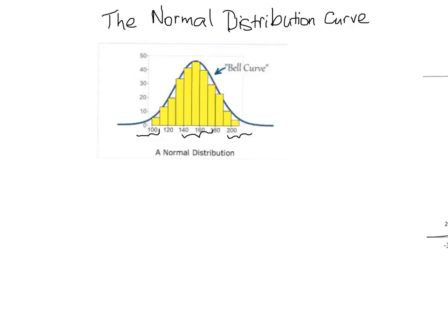Most women would be around the average weight — maybe between 130 and 170 pounds — so there would be way more women in that weight range, which is why the bar goes higher in the middle and the bars are very low at the ends. Several things follow this trend. SAT scores, for example: most people score around the middle, around 500 in each subject. Very few people score 200 or 800, but a lot score in the 400s to low 600s. That's what the normal distribution curve shows.